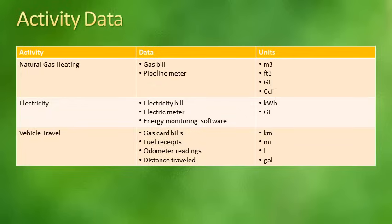In order to determine which greenhouse gases your organization will be responsible for reporting, you'll first need to gather activity data on your organization. For each activity, you'll need to determine what the source of the data will be — for instance, will the data come from a bill from the provider, or will it come from a meter on-site? Furthermore, you'll also need to determine in what units of measure the data will be provided. Sometimes there may be multiple units of measure for a single source.